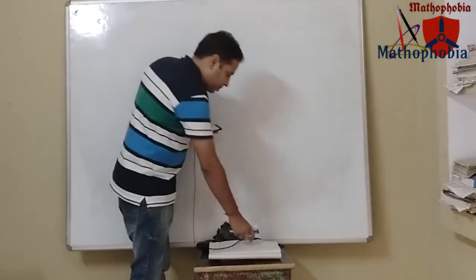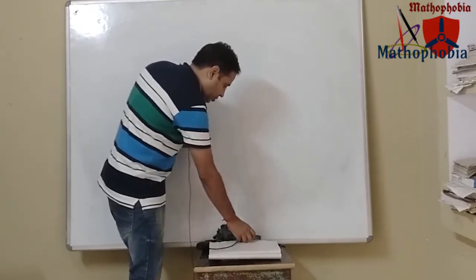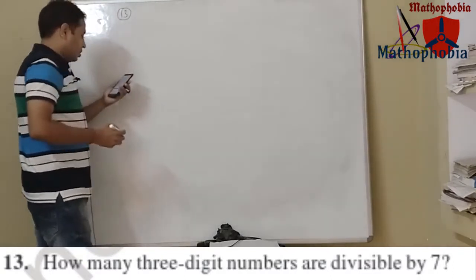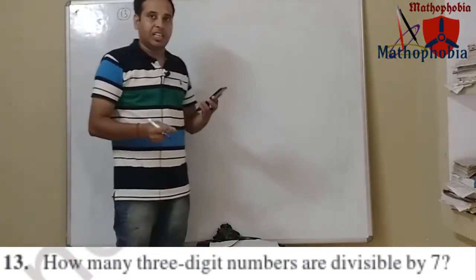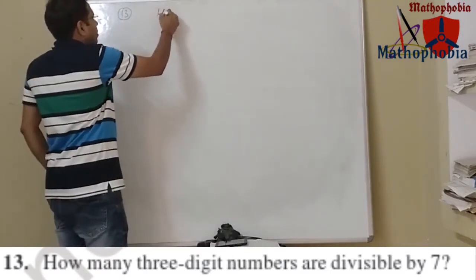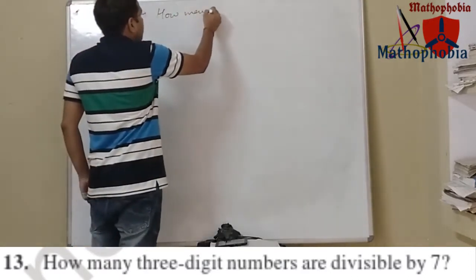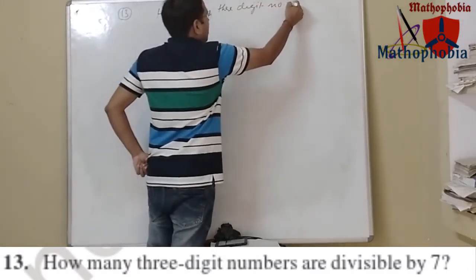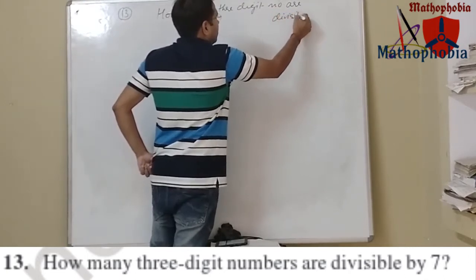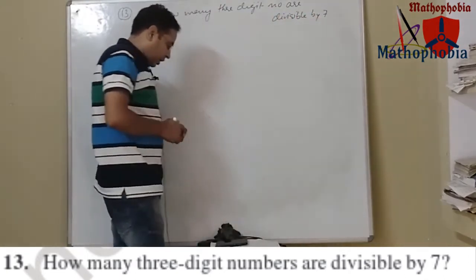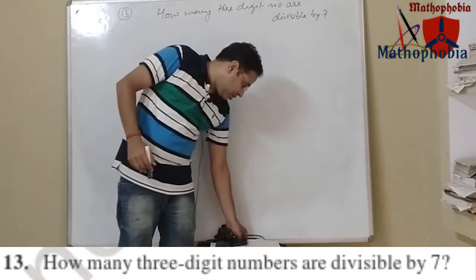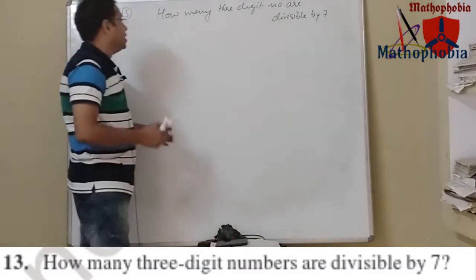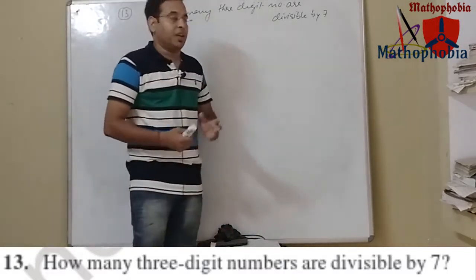Question number 13 says: how many three-digit numbers are divisible by 7? In the example we studied, we found how many three-digit numbers are divisible by 3. Now here we need to find out how many three-digit numbers are divisible by 7.